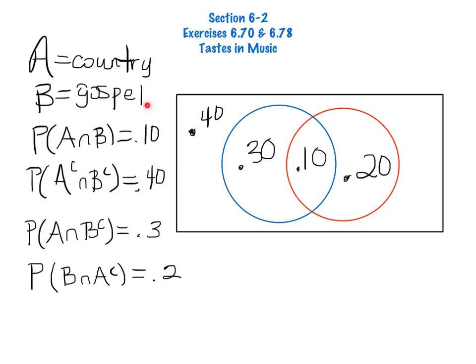If we add all these values together, notice that we will get 1, and all of these events comprise the sample space. Either a student likes both, a student likes neither, a student likes country but not gospel, or a student likes gospel but not country.